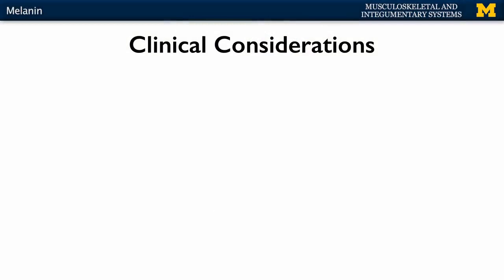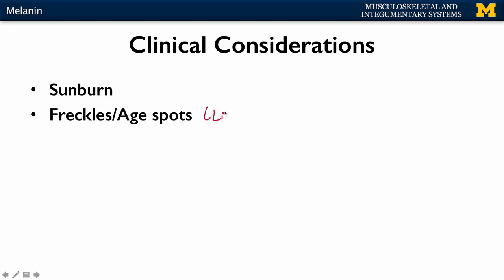In terms of clinical considerations, one of the first things to consider is sunburn. If you have exposure to UV radiation, melanin production can increase, but it can only increase so much. If exposure goes past that threshold, you can have sunburn — typically a reddening in the areas of too much UV exposure. In some areas you can have an accumulation of melanin, referred to as freckles, and if these occur later in life, they are called age spots or liver spots.